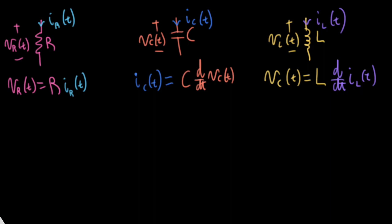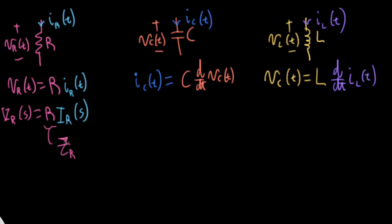I can take the Laplace transform of both sides of all of these equations. On the left, I'll write V sub R of S is equal to R times the current in the Laplace domain. And what we're going to do is define this R here as Z sub R, which is the impedance of a resistor — or rather, we're defining Z sub R as R.